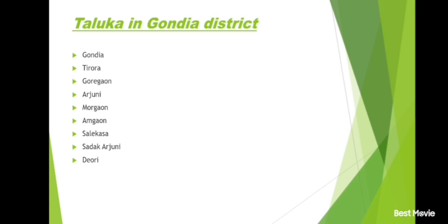Gadchiroli district and its talukas: Chamorshi, Gadchiroli, Aheri, Armori, Kurkheda, Desaiganj, Wadsa, Etapalli, Sironcha, Mulchera, Korchi, Bhamragad.